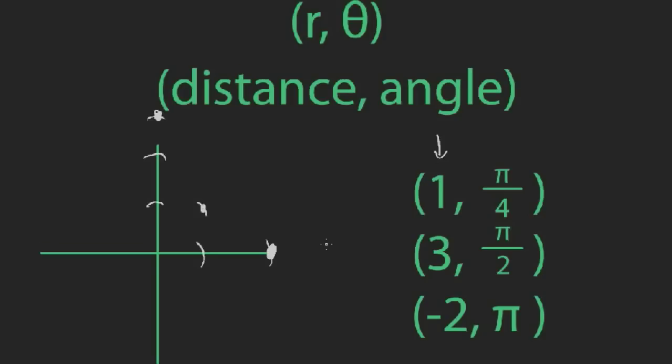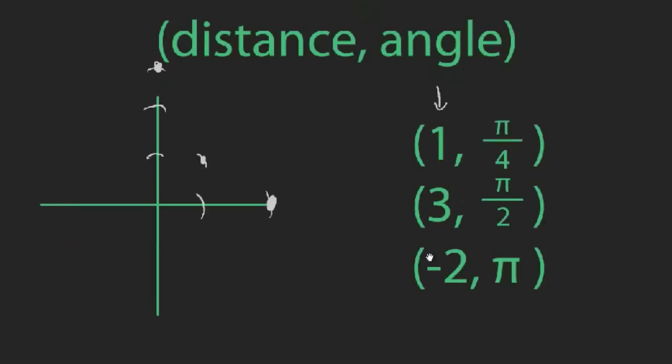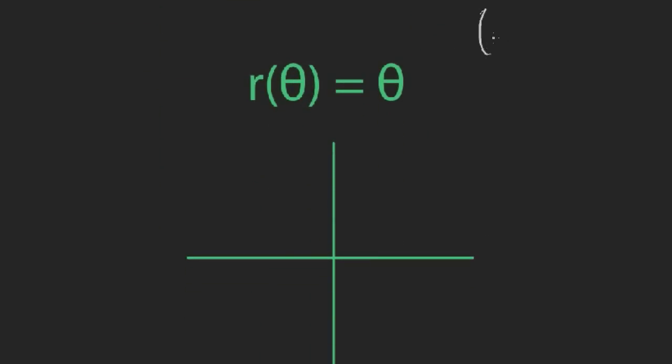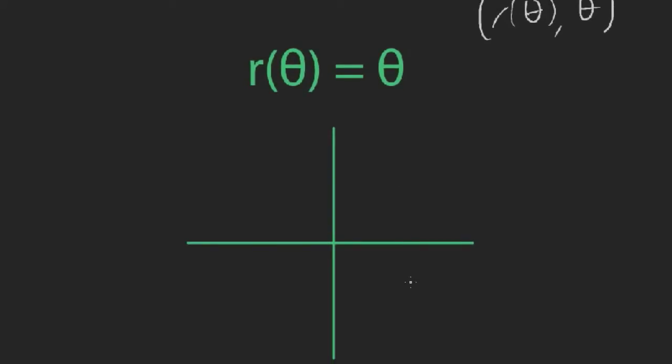But you can actually graph functions in this way. What you're going to do is graph the points r(θ), θ. You're going to graph the outputs of r(θ) with the input being θ, but you graph it in this coordinate system. Here's an example: r(θ) = θ. Think about what this means. This means that whatever angle you're making with the x-axis, take that many steps out. So what you're going to get is this spiral.